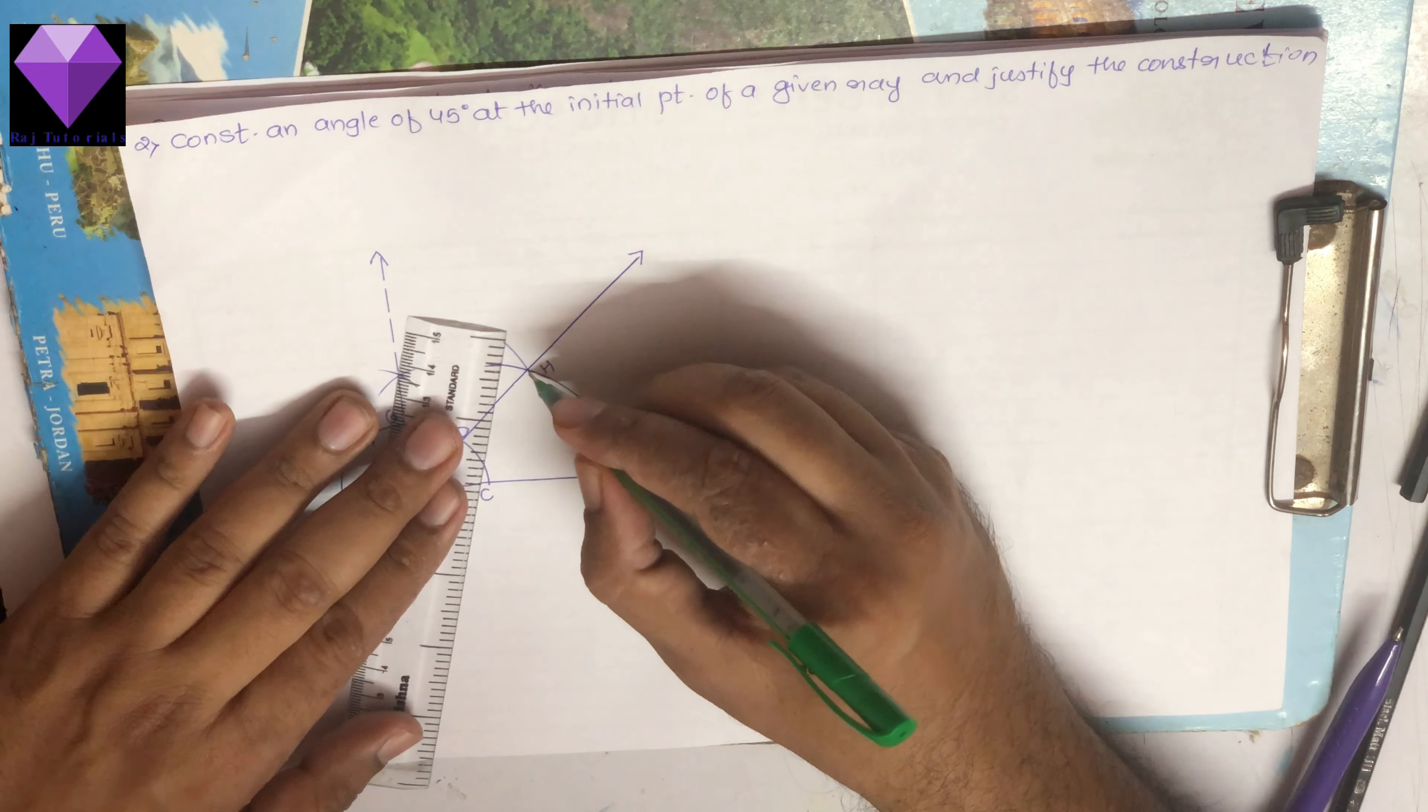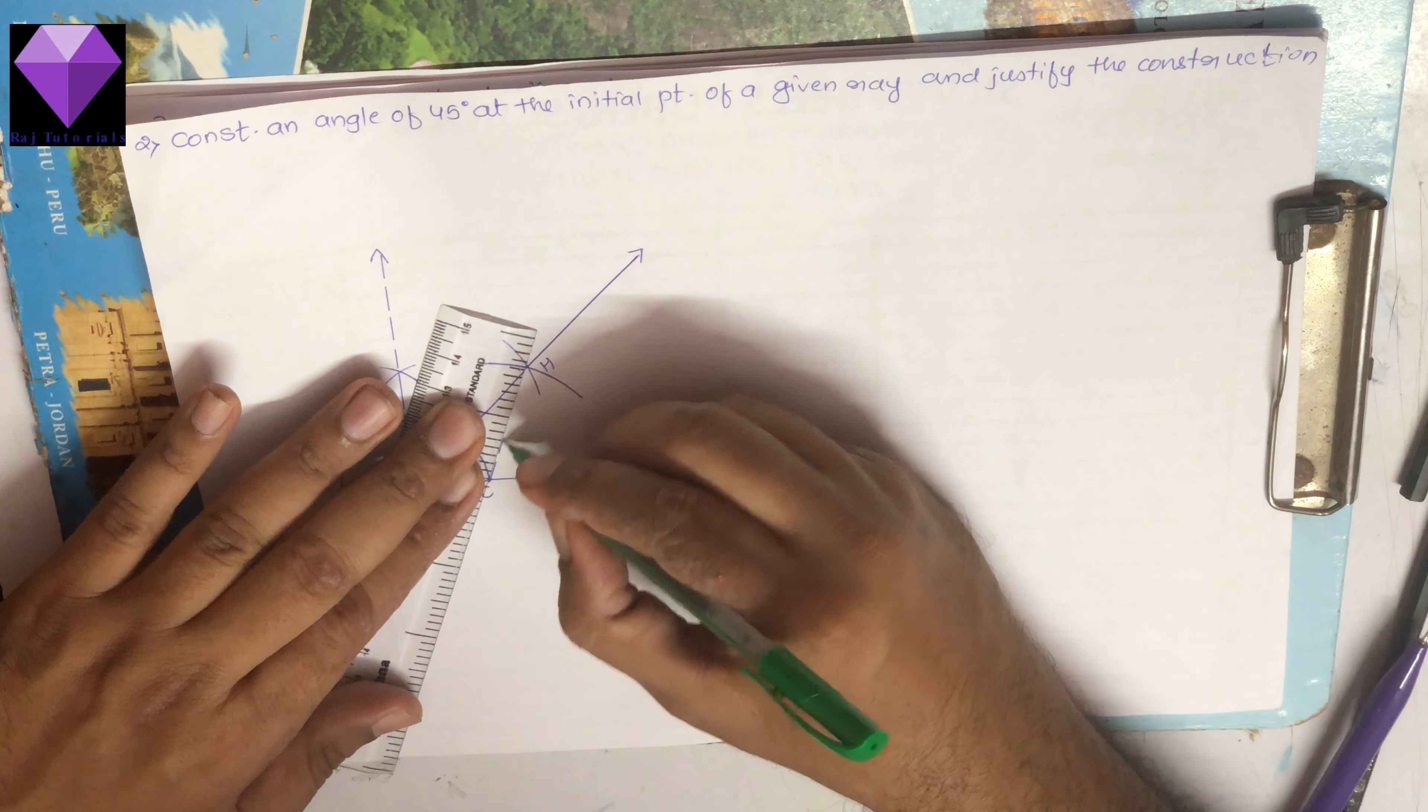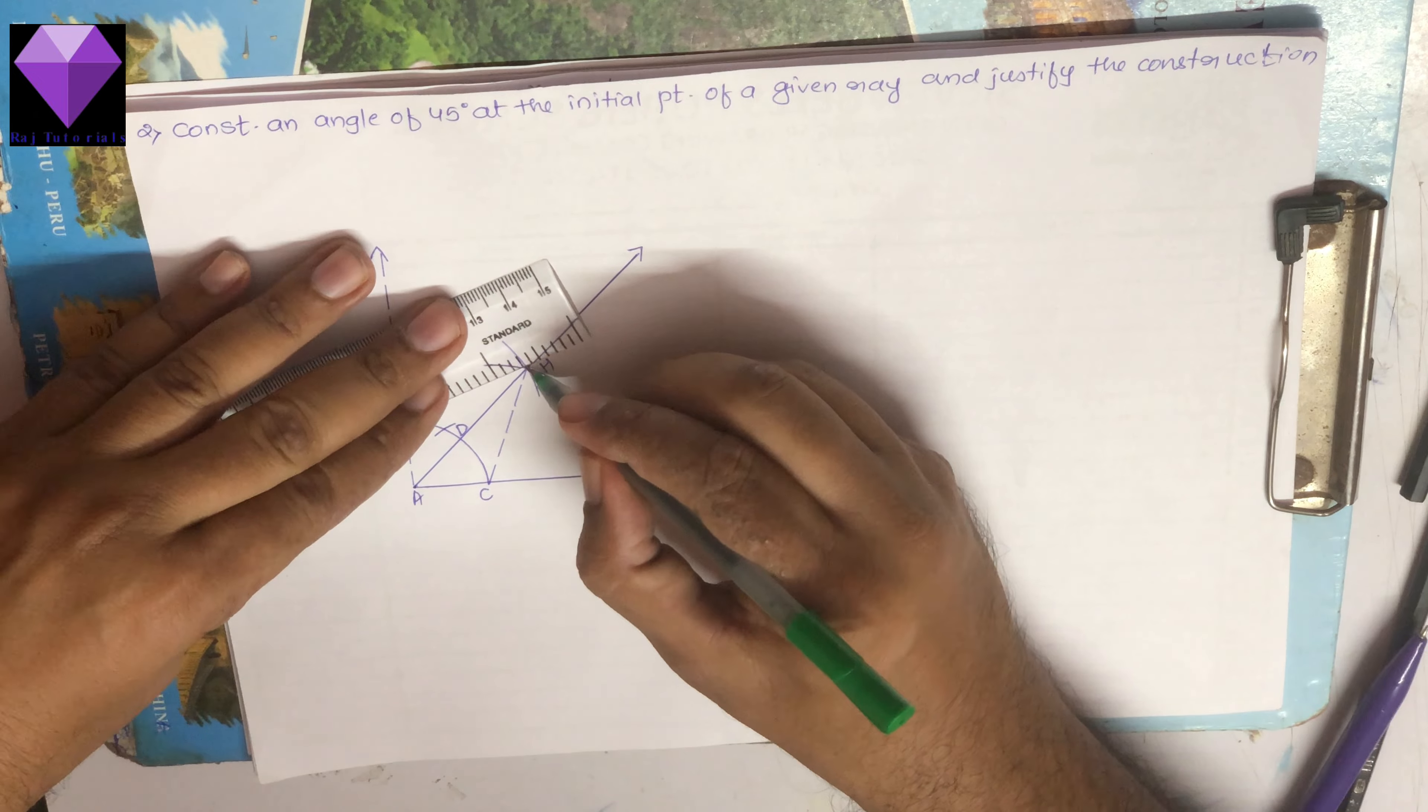Now I have to join H with C and H with G using dotted lines.